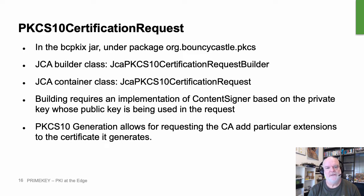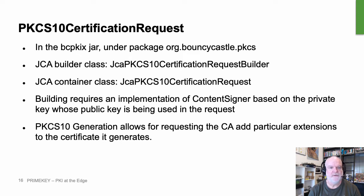PKCS10 generation also allows for requesting that the CA add particular extensions to a certificate. For example, if you wanted to add an email address using a Subject Alternative Name extension, you can incorporate that into a PKCS10 certification request and pass it on to the CA, and if the CA is amenable they will insert that as part of the overall authorization and certification process.